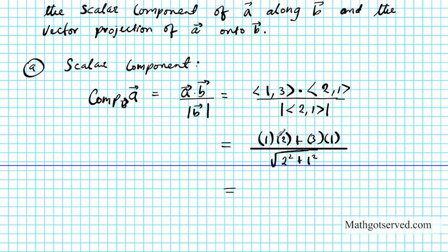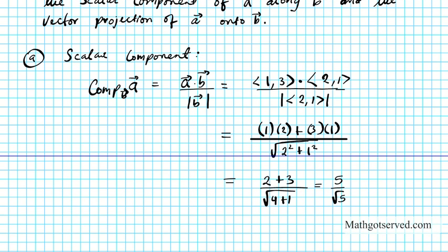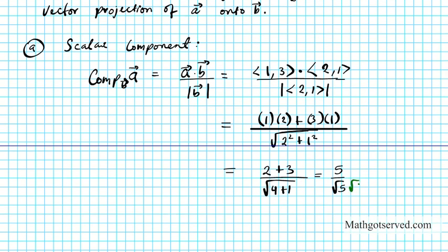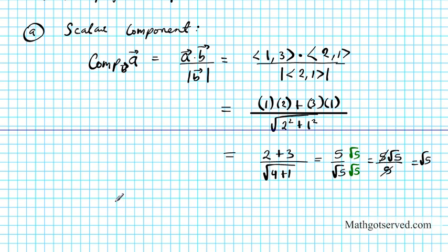So the dot product in the numerator is 2 plus 3, and in the denominator we have the square root of 4 plus 1. That gives us 5 over the square root of 5. Rationalizing the denominator by multiplying numerator and denominator by root 5, we get 5√5 over 5, which reduces to just the square root of 5. So the scalar component of vector a along vector b is √5.